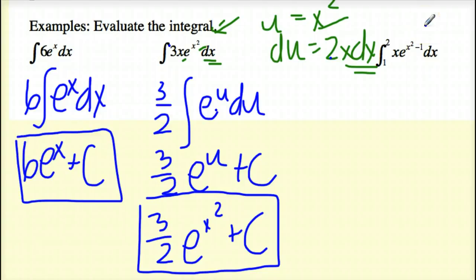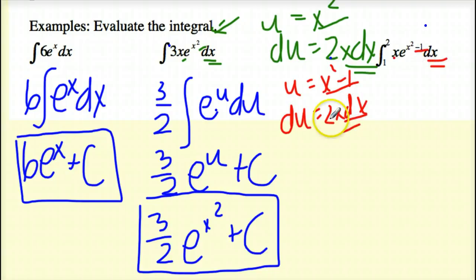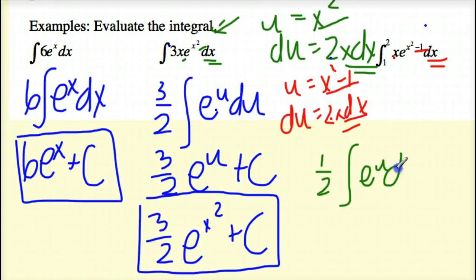Now if you take a look at this next problem, I have two differences. My exponent is different again, and second, I have actual limits. So let's do this in red. My u is equal to x squared minus 1, which means my du is equal to 2x dx. If I line this up, I have the power, I've got the x dx, and I do have to pull out this 2. So I end up getting one half the integral of e to the u du.